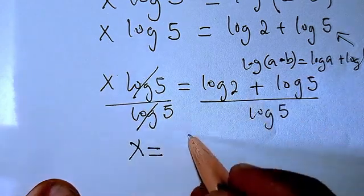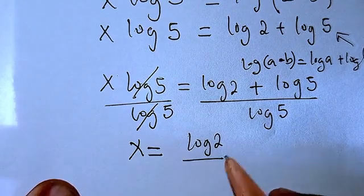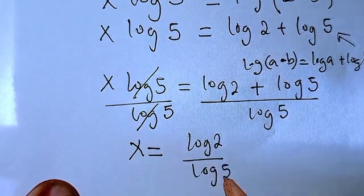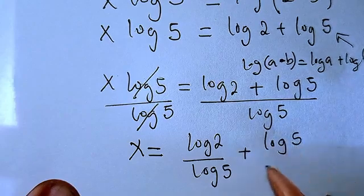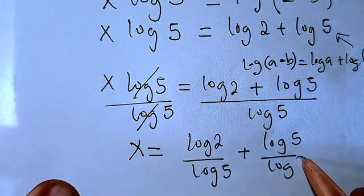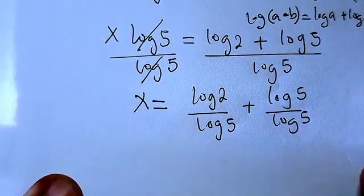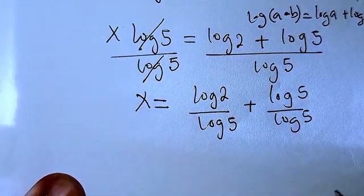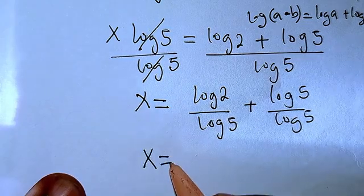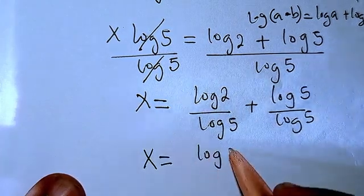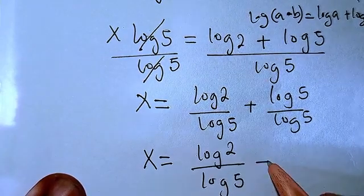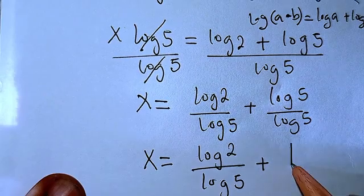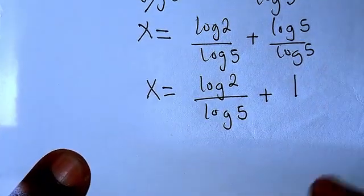I'm trying to simplify completely. So we have x equals log 2 over log 5, and this will give us, this divided by this would give us 1.